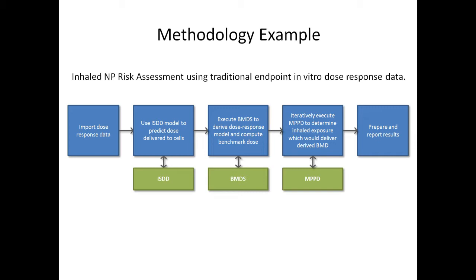Next, the tissue doses computed by ISDD are used as inputs to BMDS. BMDS determines the dose which produces no effect by employing benchmark dose methodology, wherein data is fitted to one of a variety of analytic dose response model forms, which can then be used to interpolate the dose which would produce a specified response. The resulting benchmark dose, or BMD, is the assumed safe cellular dose.